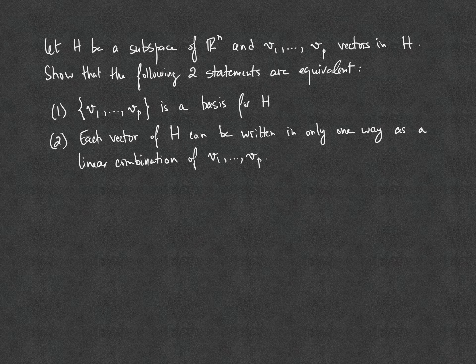Let H be a subspace of Rn and V1...VP vectors in H. We need to show that the following two statements are equivalent. Statement 1: V1...VP is a basis for H. Statement 2: each vector of H can be written in only one way as a linear combination of the vectors V1...VP.